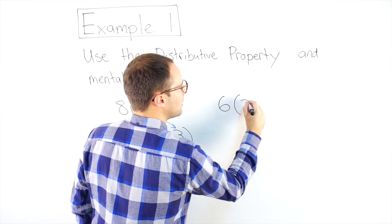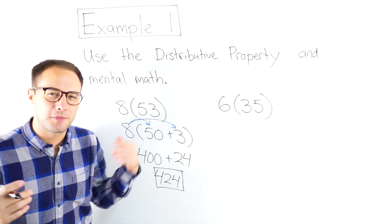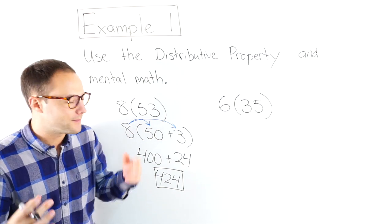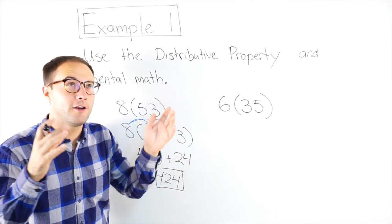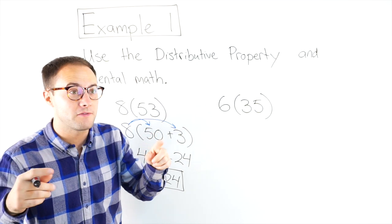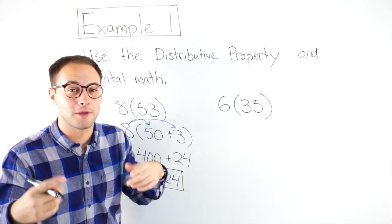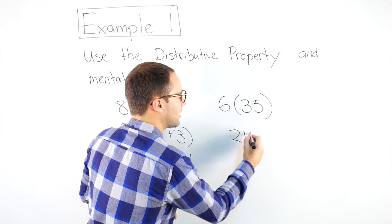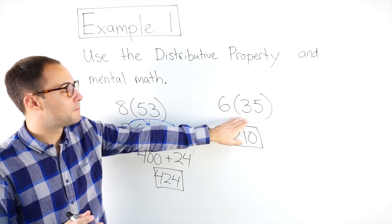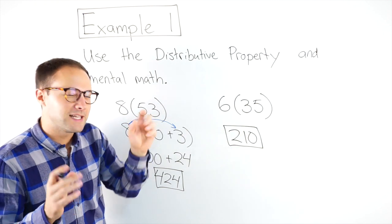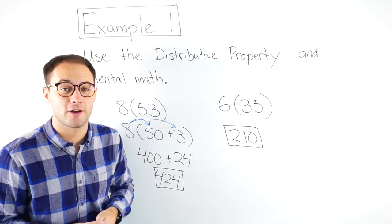6 times 35 — see if you can do it in your head. 35 is 30 and 5. 6 times 30 is 180, 6 times 5 is 30. 180 plus 30 gives me 210. Next time you have problems like this, see if you can do it in your head using the distributive property.